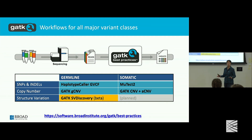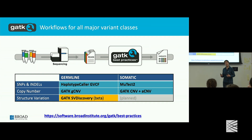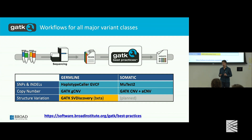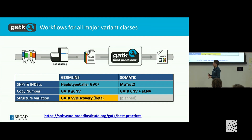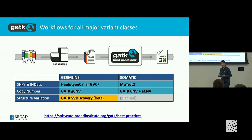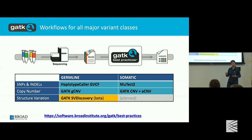GATK is a toolkit with many tools — it's not just one variant caller. GATK includes over 100 tools at this point, quite a bit more if you count all the Picard ones. We're going to scope this workshop and talk specifically about four main applications: short variants, so SNPs and indels, and copy number variation. In both cases we'll cover the germline and the somatic case. Structural variation is something we are actively developing but it's not fully mature yet, so we're not going to cover it in this workshop — but watch that space.